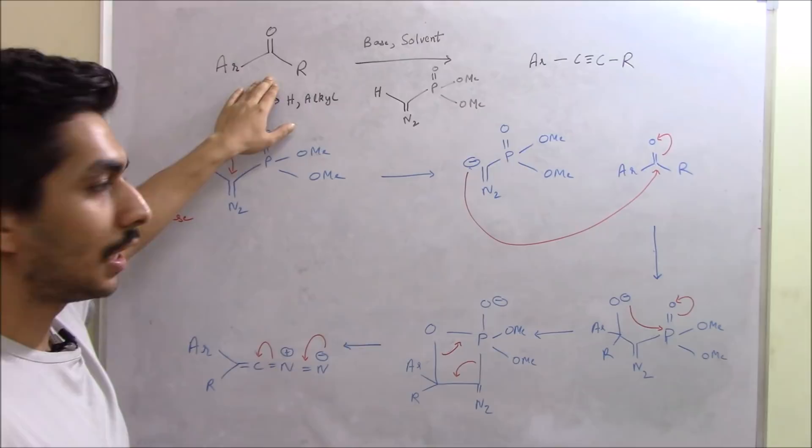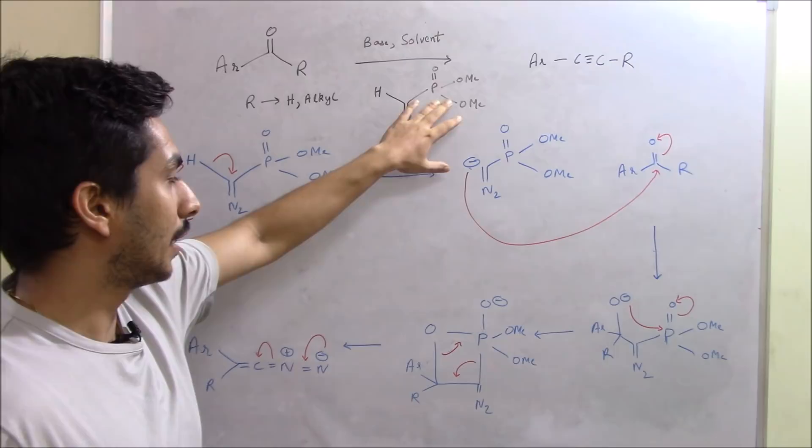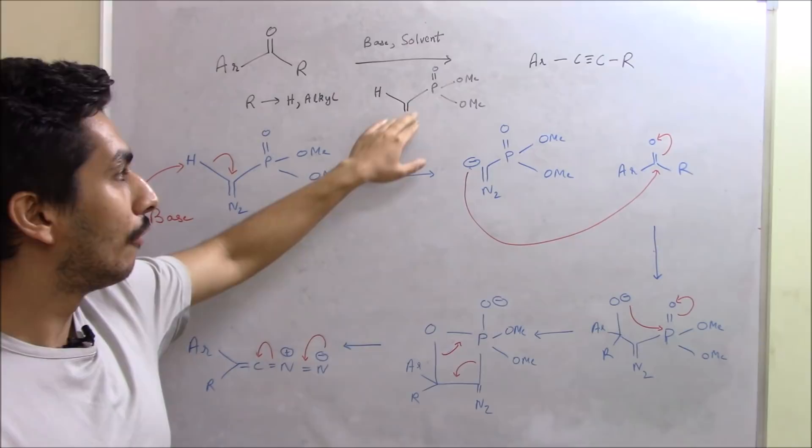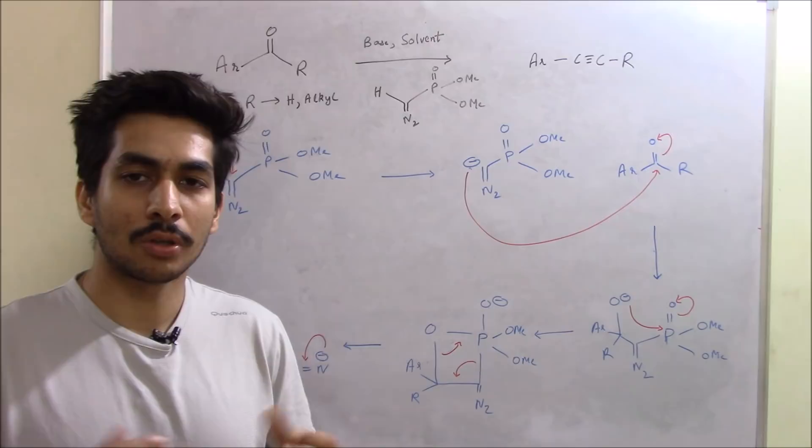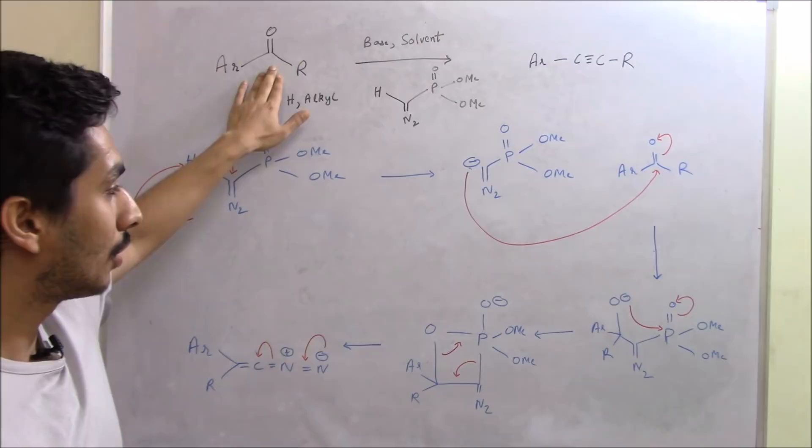The reagent we use is a phosphor compound known as dimethyl diazo phosphonate. This compound is the active reagent which leads to this reaction. It's called a homologation reaction because there's an increase in the number of carbons — whatever the number of carbons present in the starting material, there's an increase, and that's why this is called a homologation reaction.